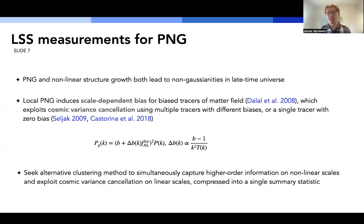Now, one of the challenges of large-scale structure measurements is that unlike in the early universe, in the late-time universe, there's non-linear structure growth that can lead to intrinsic non-Gaussianities separate from any non-Gaussianities that were present after inflation. And we need some way of disentangling these two effects. And local PNG in particular is unique because it induces a scale-dependent bias when you have bias tracers of the matter field. And because of the particular form of this scale-dependent bias, if we're observing multiple tracers that have different linear biases, or if we just have a single tracer that has zero bias, we can exploit this notion of cosmic variance cancellation to be able to achieve tighter constraints than if we were limited by cosmic variance. So in other words, shot noise is the only limitation in the constraints that we can achieve. So ideally, we're seeking some alternative clustering method that can simultaneously capture higher-order information on non-linear scales and also exploit cosmic variance cancellation on linear scales. And ideally, this would be compressed into a single summary statistic.